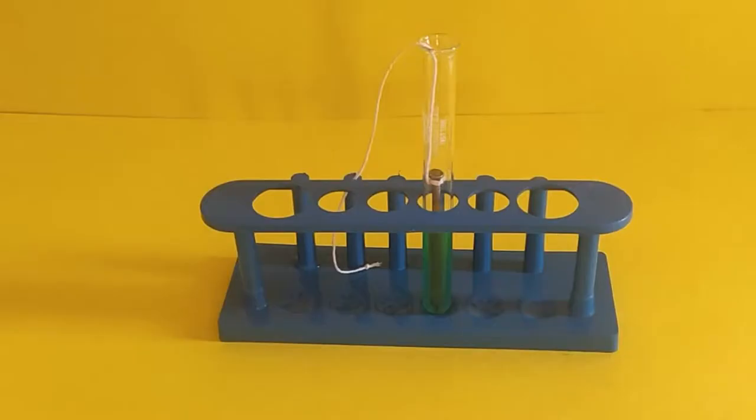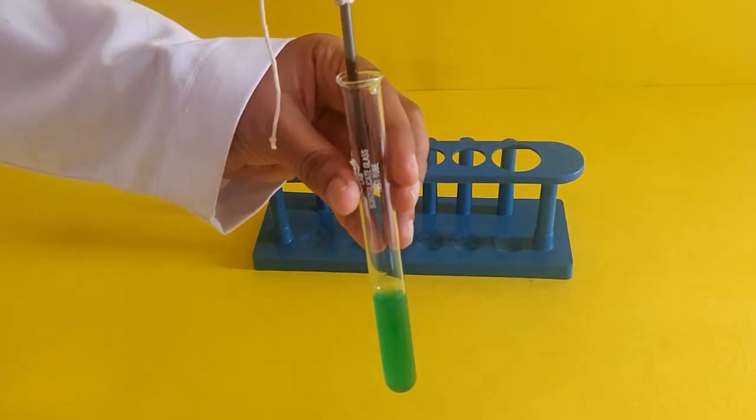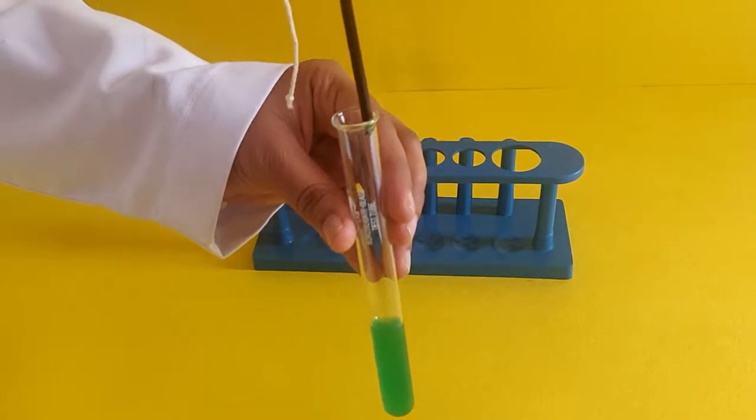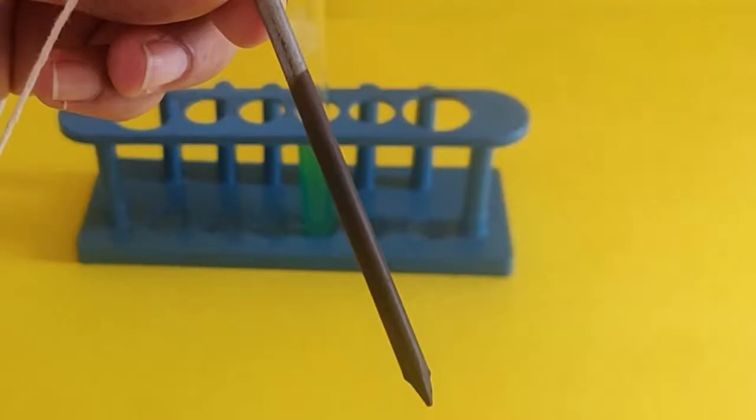It has been a couple minutes since we left the nail in the copper sulfate solution. Pull the nail out of the tube to observe any changes. You will notice that there is a brown buildup on the iron nail. This buildup is a layer of copper.